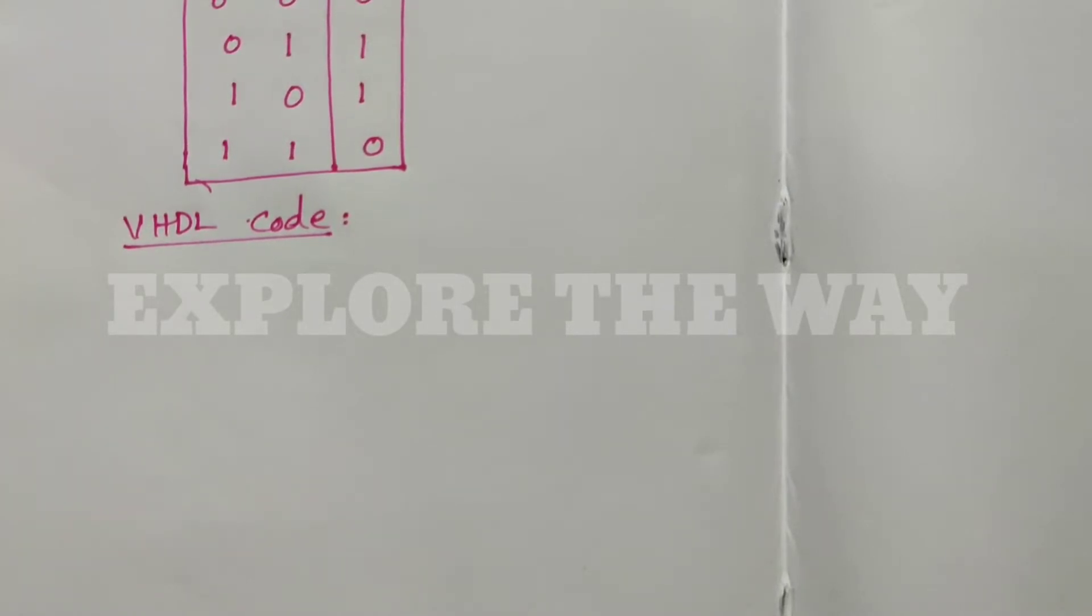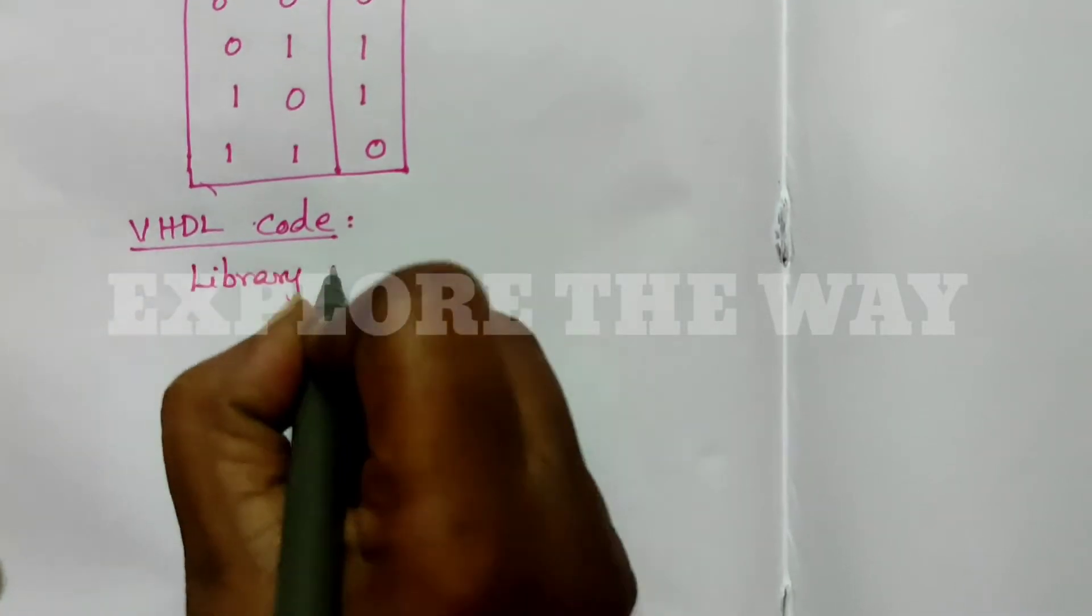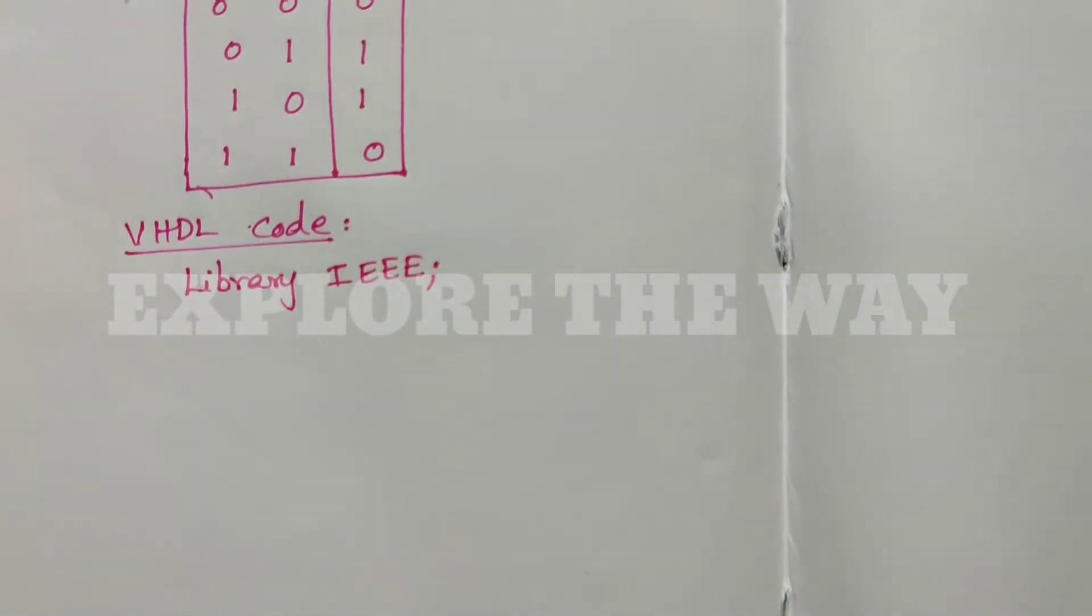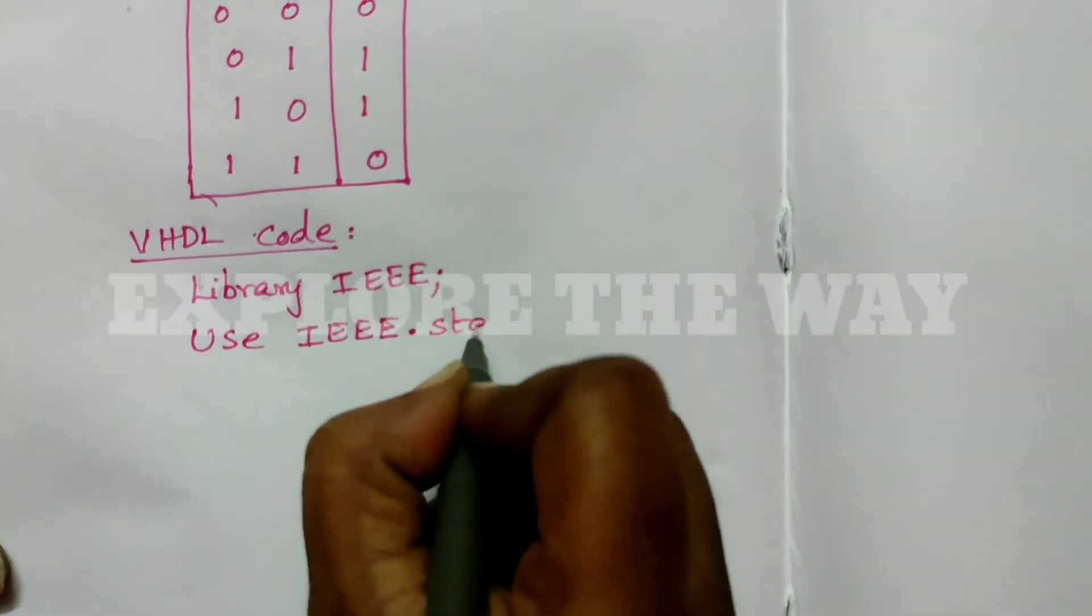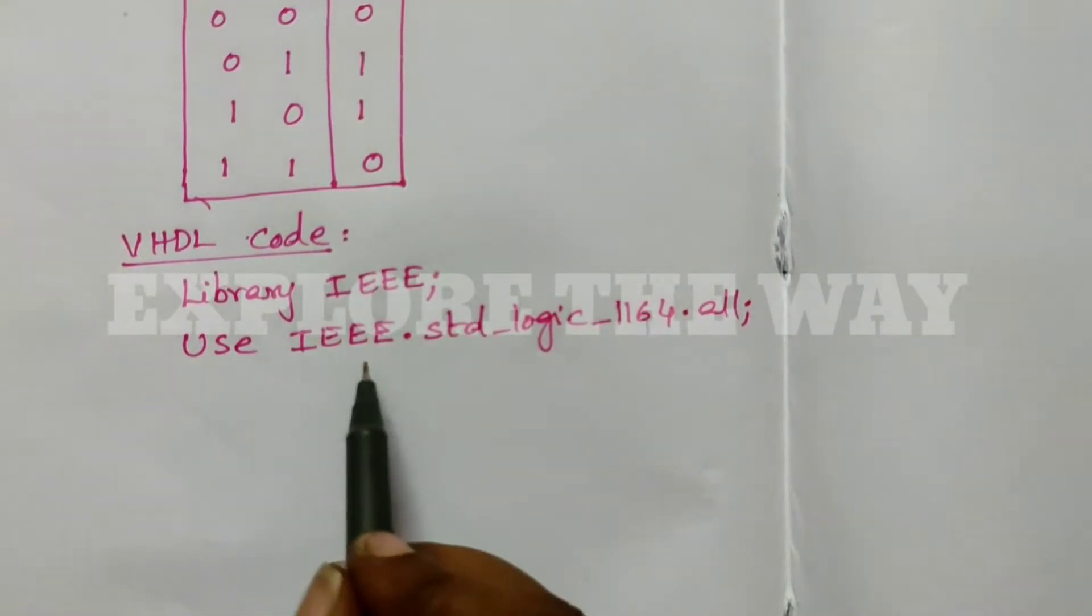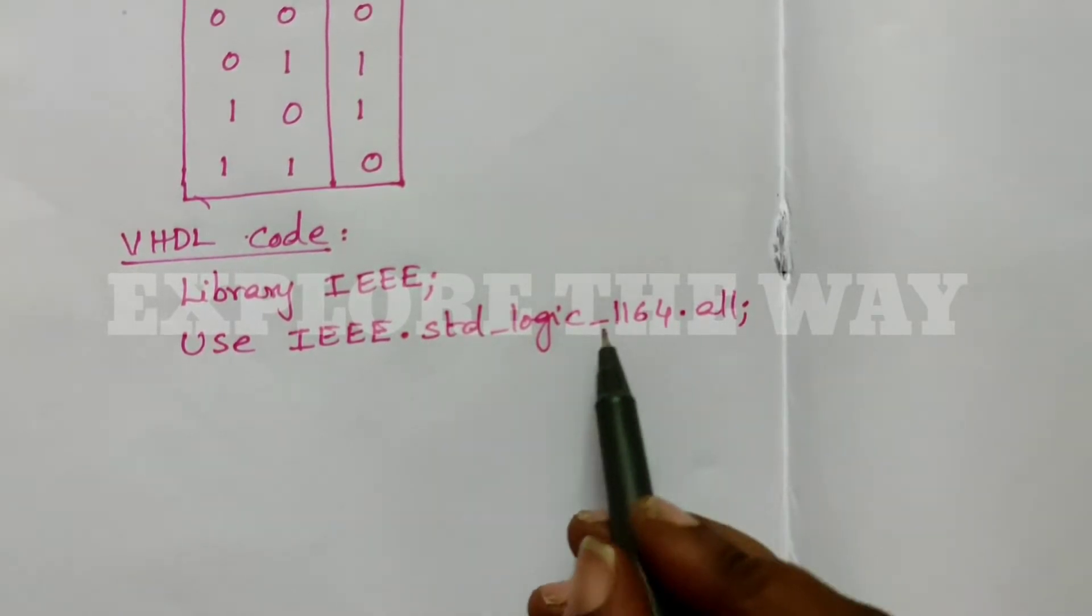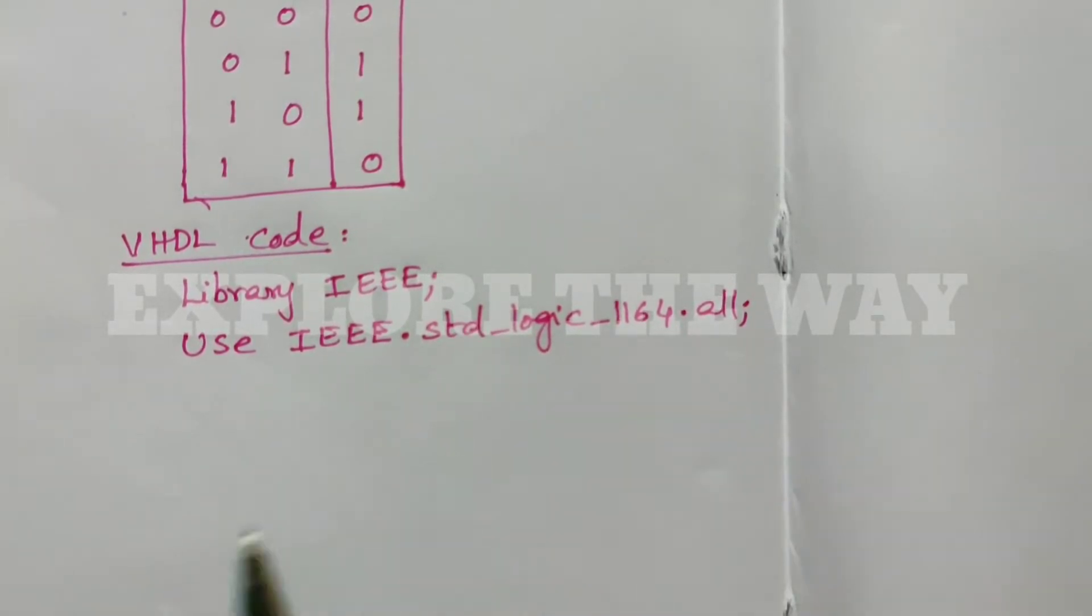First is the library declaration. VHDL is an IEEE standard. We are using the IEEE library. From the IEEE library we are using the Standard Logic package: USE IEEE.std_logic_1164.all.